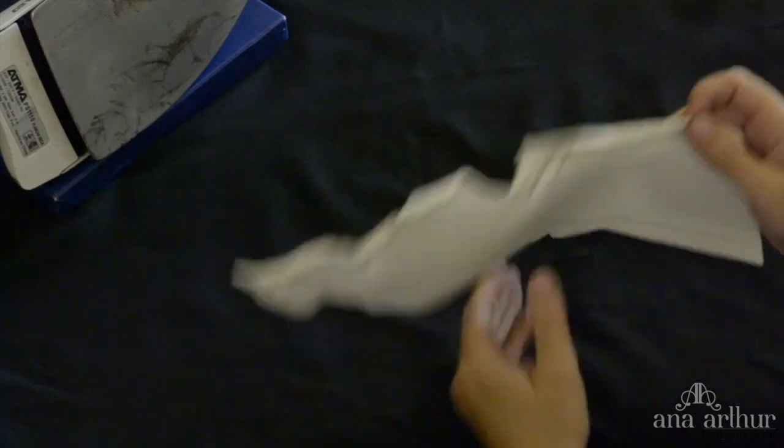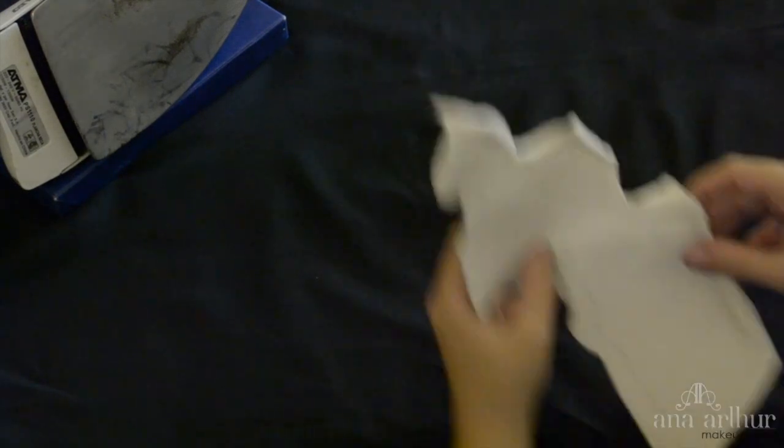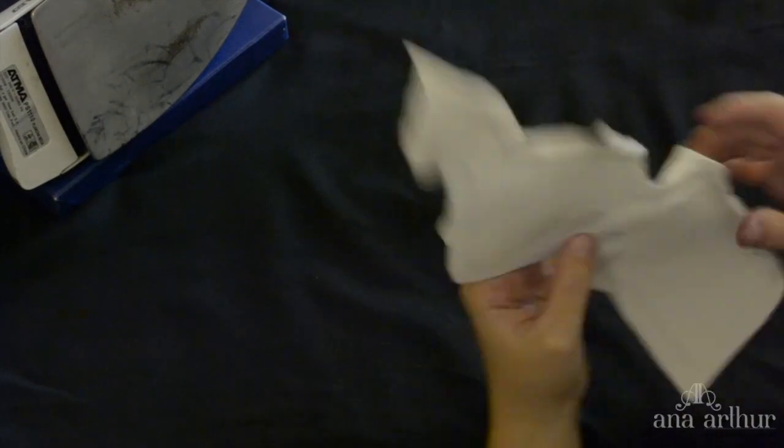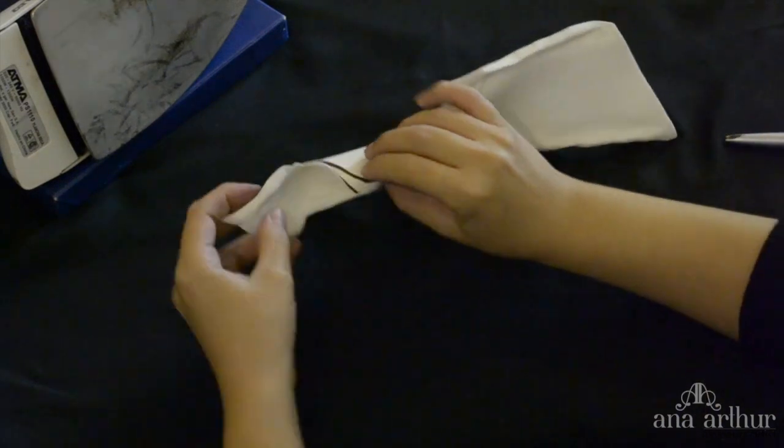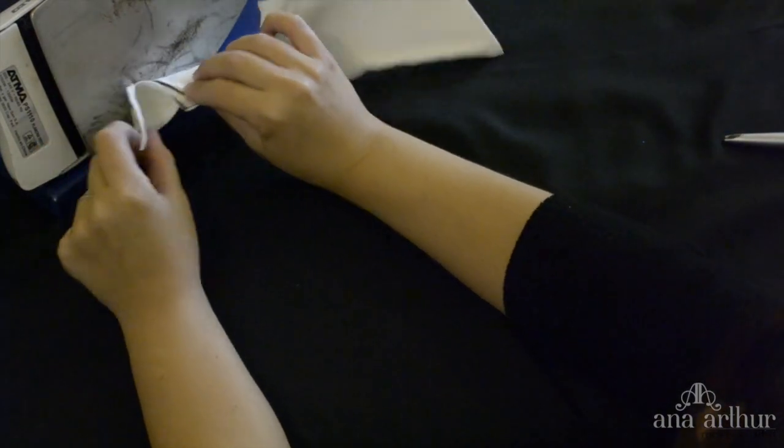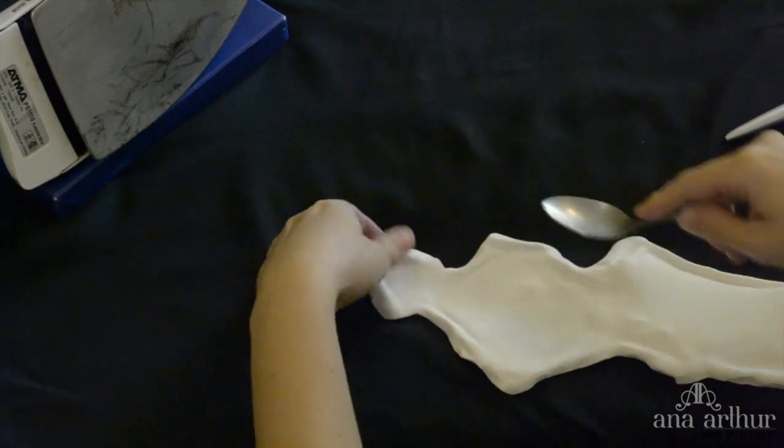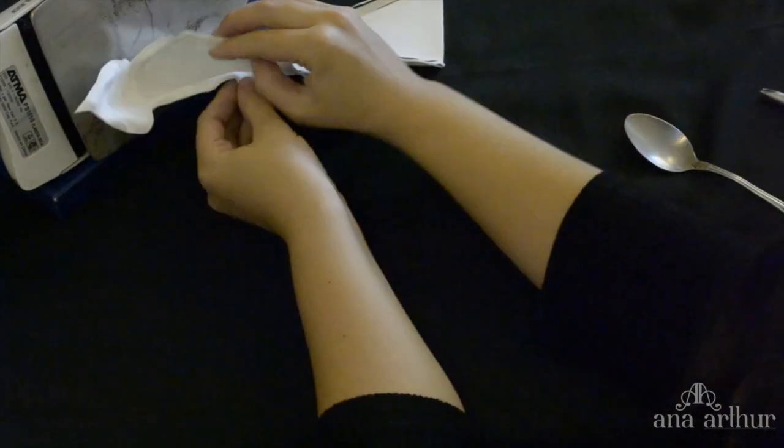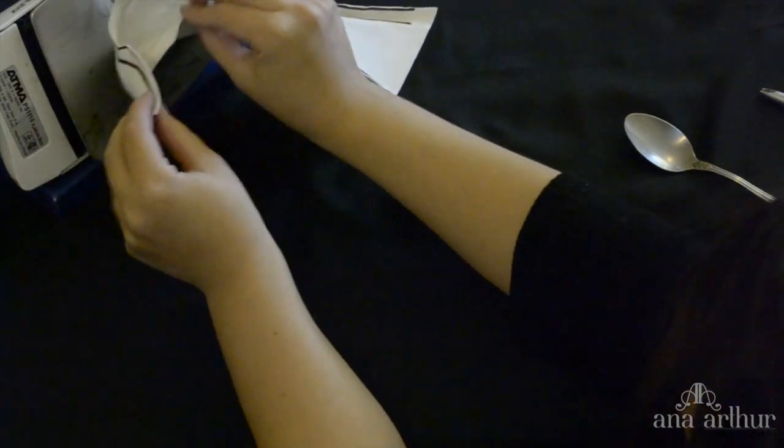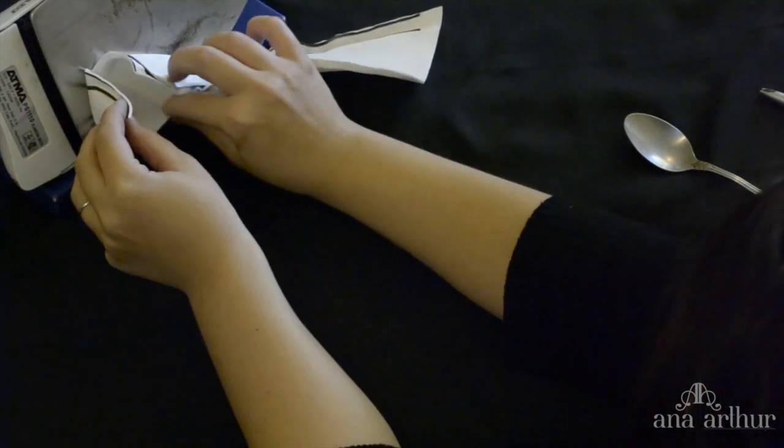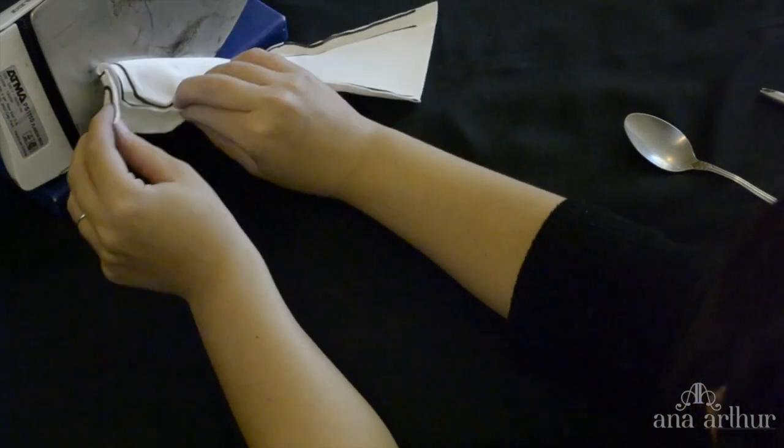After I have the shape that I want, I'm going to turn that over and I'm starting to heat the other side so I can shape the center. I'm just heating out the middle and with the spoon, shaping it, giving it a hollow effect.